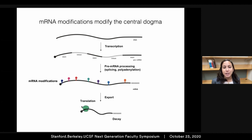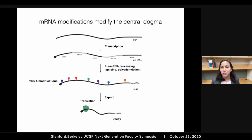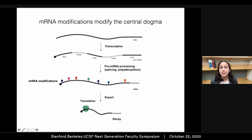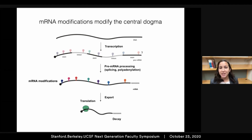Eukaryotic messenger RNAs are extensively decorated with modified nucleosides that are emerging as an additional layer of gene regulation. These modified nucleosides have unique chemical properties compared to canonical bases, and especially if added early to pre-messenger RNA, could potentially influence any step of the processing of messenger RNA to influence gene expression.